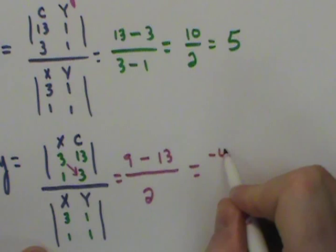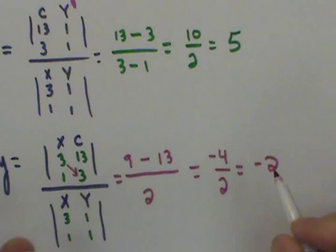Now of course, I have to take 9 minus 13, which is negative 4. And negative 4 divided by 2 will be negative 2. That gives me a solution of 5, negative 2.